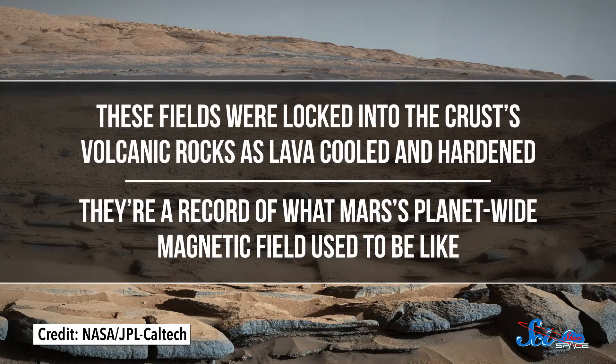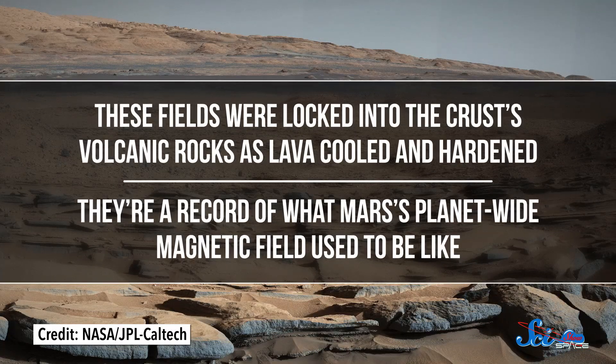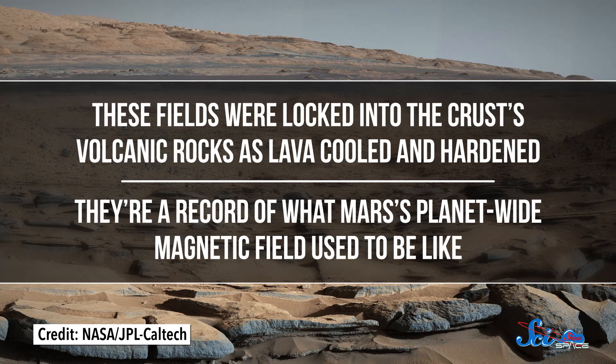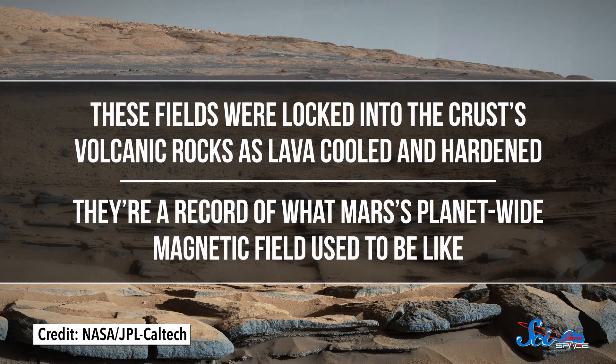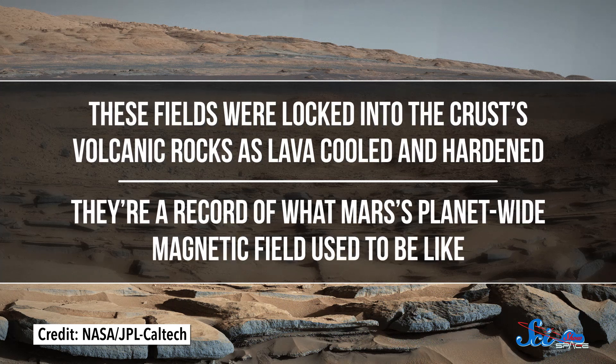So in 2012, scientists from the University of Colorado were studying the magnetic fields frozen into the Martian crust. These fields were locked into the crust's volcanic rocks as lava cooled and hardened, and they're a record of what Mars' planet-wide magnetic field used to be like. They're basically little time capsules, and by studying them, we can learn more about when volcanic activity happened and for how long.